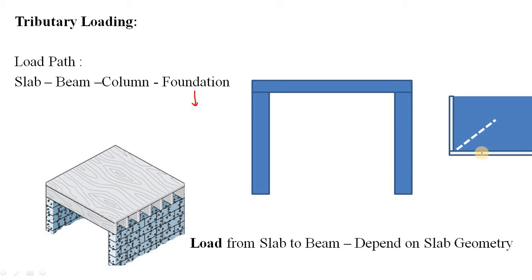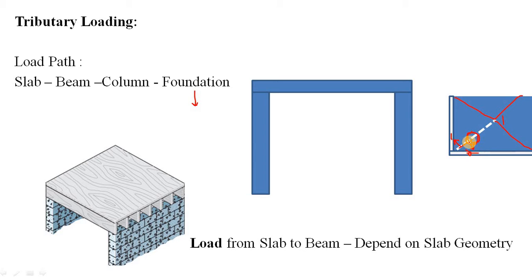When the load from your slab is transferred to the beam — say this is your slab, thoroughly loaded with an area load — whatever load is in the slab tends to divide equally between the beams. So 50 percent of the load goes to one beam and 50 percent goes to the other beam. You can imagine the slab divided into four parts, where each dividing line makes a 45-degree angle with the adjacent beam. This way all the loads of the slab are transferred to the beam.